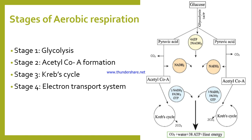Stage three is the Krebs cycle. In the Krebs cycle, the two-carbon acetyl CoA obtained from the earlier stage is oxidized to produce two molecules of carbon dioxide. This cycle is named after British scientist Hans Krebs who discovered it. In this stage, acetyl CoA enters the mitochondria — stages one and two occur in the cytoplasm, but stage three moves into the mitochondria. Along with carbon dioxide, we also get three NADH₂, one FADH₂, and one GTP, where GTP is guanosine triphosphate.